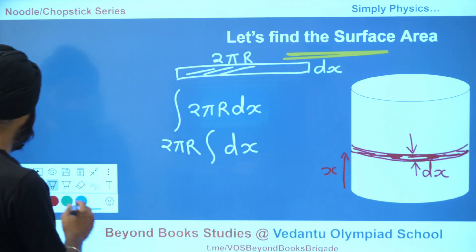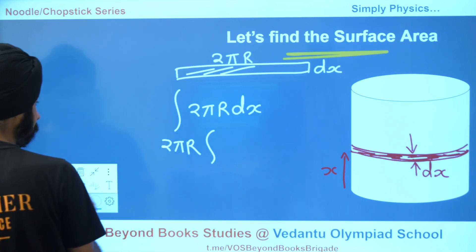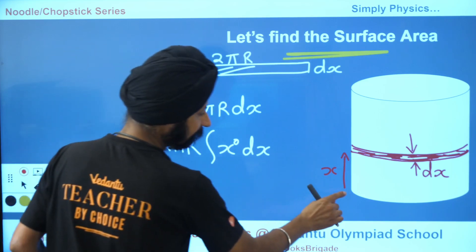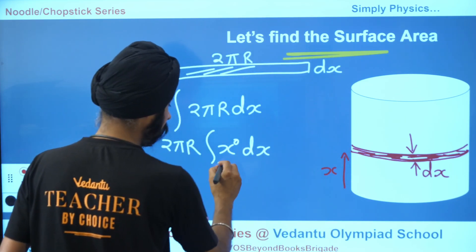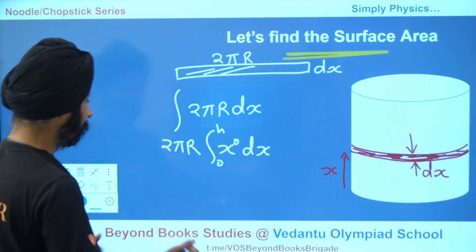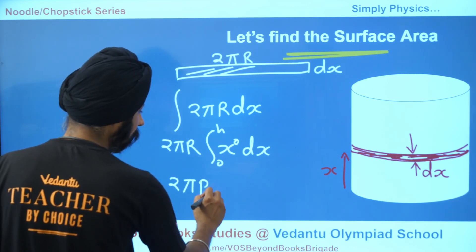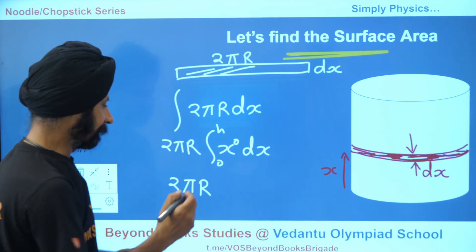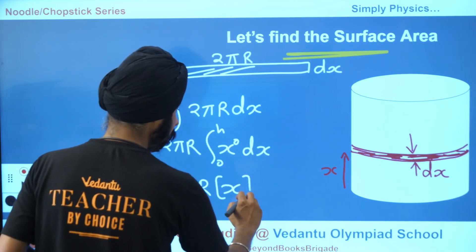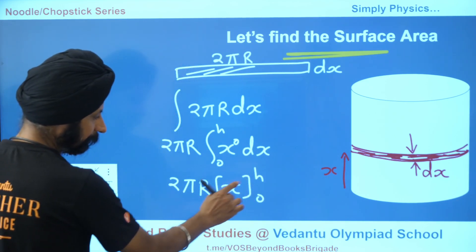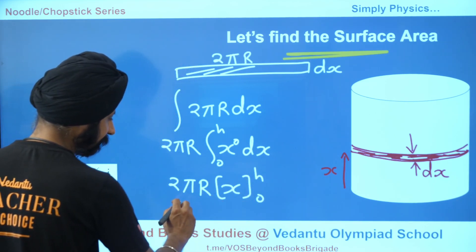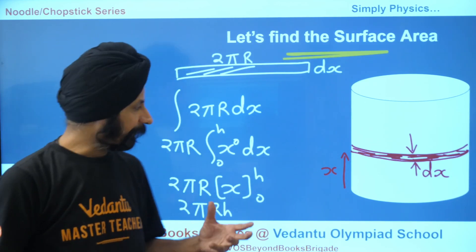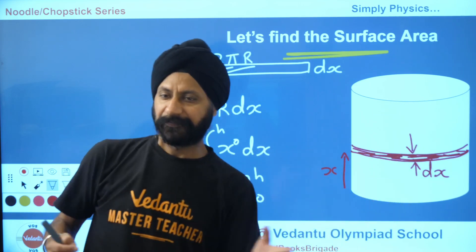Or if you're purely into calculus, you can write this dx as x^0 dx, right? Then you put the limits. x starts from 0 to h. So 2πr times x^(0+1), that is x over 1. Then you put the limits 0 to h. You put h, that is h minus 0, so h. So 2πrh. That's good. I was able to find the curved surface area of a cylinder.